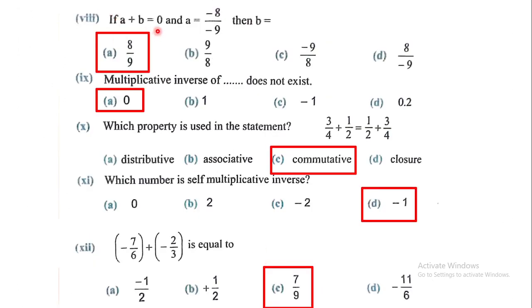If A plus B equals 0 and A equals minus 8 by minus 9, then B equals... Option A is correct. Multiplicative inverse of 0 does not exist.